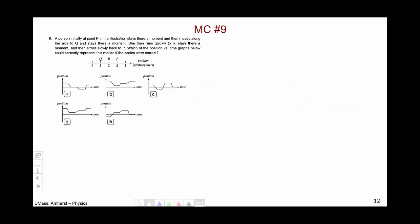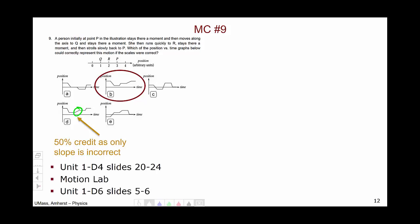Multiple choice number 9 involved trying to pick the graph from the story given. The correct answer was B. I'm going to give 50% credit for choice D, as the only real mistake was the slope being incorrect in a particular region. This was discussed in unit 1, day 4, slides 20 through 24, and in the motion lab, with some additional discussion in unit 1, day 6, slides 5 through 6.